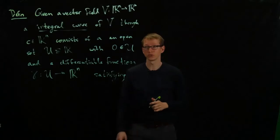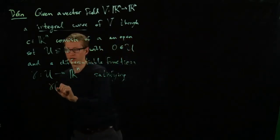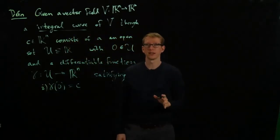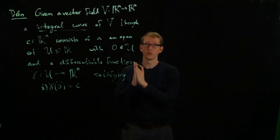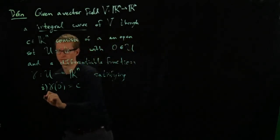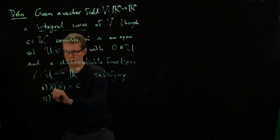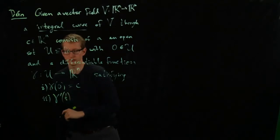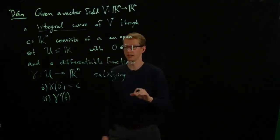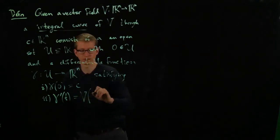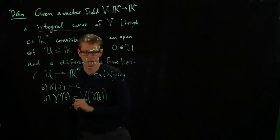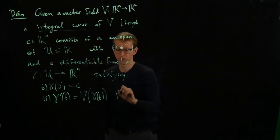Satisfying the conditions that initially, at time t equals 0, we are at our initial point. And secondly, the derivative of this function is equal to what the value of that vector field is at that point. The derivative of the curve as a function of time is given by the value of the vector field at that point in time for all t in U.